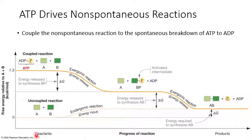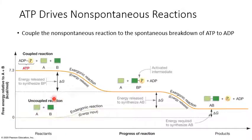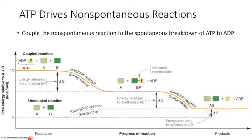This is a graph with reaction progress on the x-axis and energy on the y-axis. You start with reactants on the left-hand side and end up with products on the right. The bottom shows a non-spontaneous reaction without ATP: you have molecule A and molecule B, and you're trying to put them together to make molecule AB. That's an anabolic reaction because you're starting with two smaller molecules and putting them together to make a bigger one. It's non-spontaneous because you're starting with simpler molecules and putting them into something more complicated.